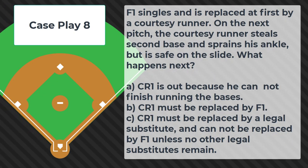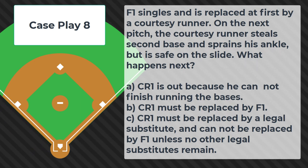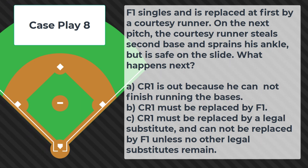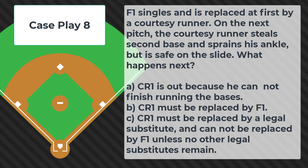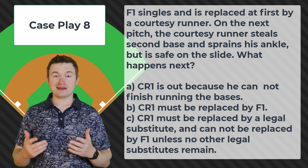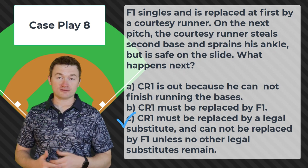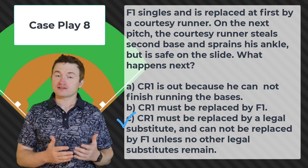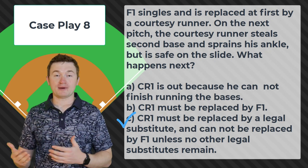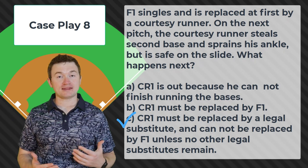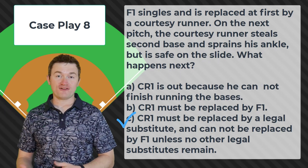Case play number eight: F1 singles and is replaced at first by a courtesy runner. On the next pitch the courtesy runner steals second base and sprains his ankle but is safe on the slide. What happens next? Is it: A — CR1 is out because he cannot finish running the bases, B — CR1 must be replaced by F1, or C — CR1 must be replaced by a legal substitute and cannot be replaced by F1 unless no legal substitutes remain? The correct answer is C. The team is allowed to bring in a different courtesy runner. If no eligible players remain, then F1 would be allowed to come back in and finish running the bases.